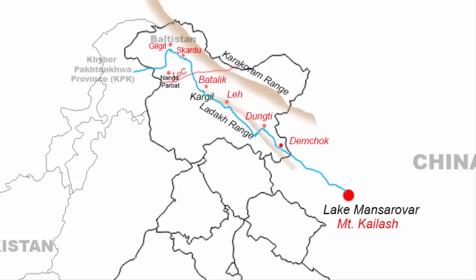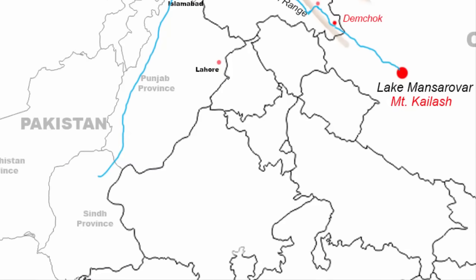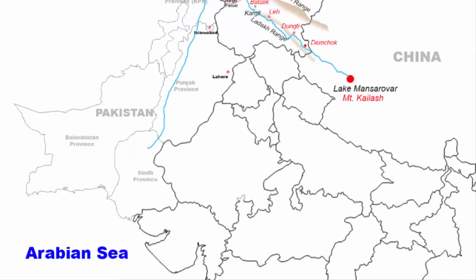The Indus River gets its water supply from the melting of snows and glaciers of many mountains of the Karakoram range. The river then takes a south-western course and flows across the Khyber Pakhtunkhwa province, then through the plains of western and southern Punjab province of Pakistan. The river continues towards the Sindh province, where it accumulates a lot of sediments and forms the Indus River delta before draining into the Arabian Sea.